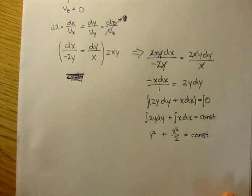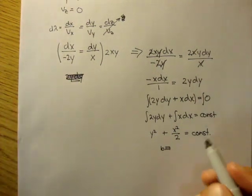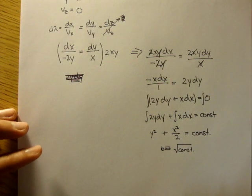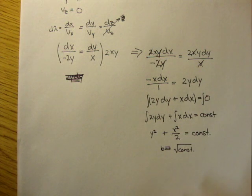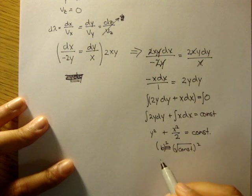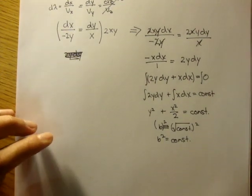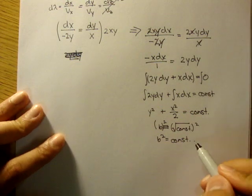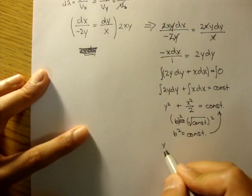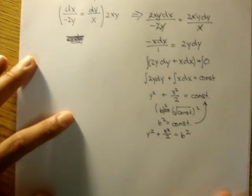Now, here's kind of the tricks. Let's let b, the variable b, be defined as the square root of a constant. And if that's the case, if we were to square both sides of this equation, we'll get b squared is equal to a constant. Nothing fancy, we're just saying, let b squared equal a constant. And so we can plug this constant back here. So we'll rewrite it as y squared plus x squared over 2 is equal to b squared.